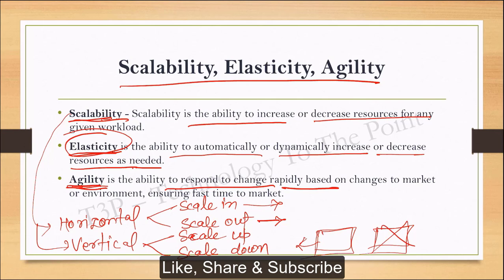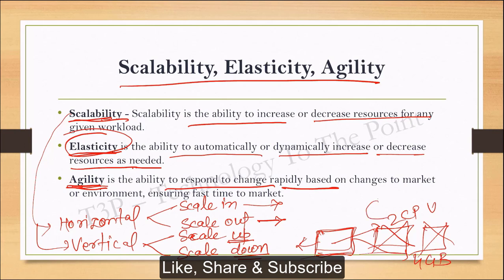For example, if we have a load balancer running on four nodes and the load increases for the application and services, we will add one more server. If we don't require that one, we can remove it — that is scale in or scale out. Scale up means on a single resource, if it has two CPUs and four GB of RAM and the system is slow, we increase from two to four CPUs — that is scale up.